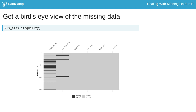Vis-miss also provides missingness summary statistics, showing the overall percentage of missingness in the legend and the amount of missings in each variable. These can be turned off in the options described in the help file.